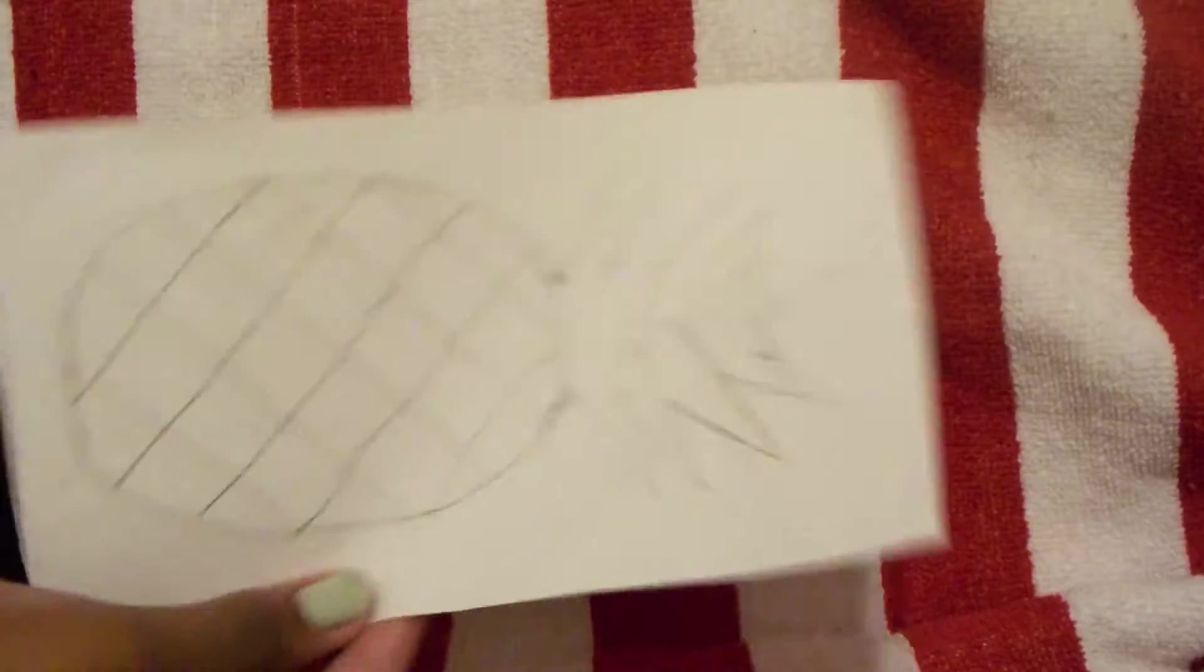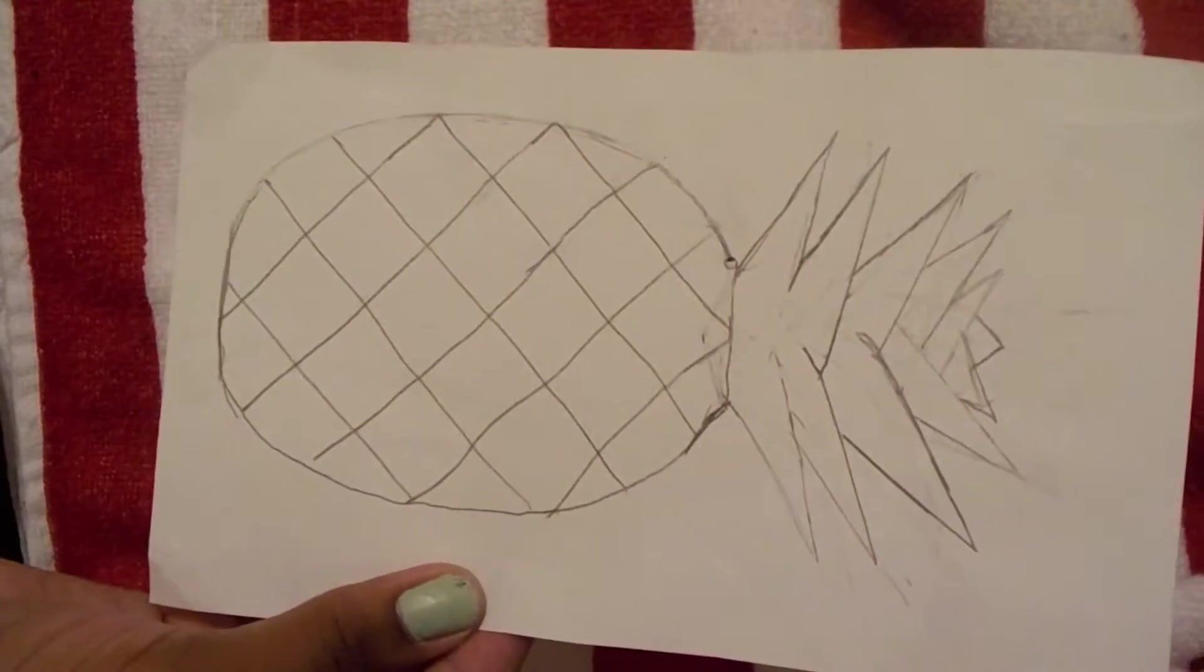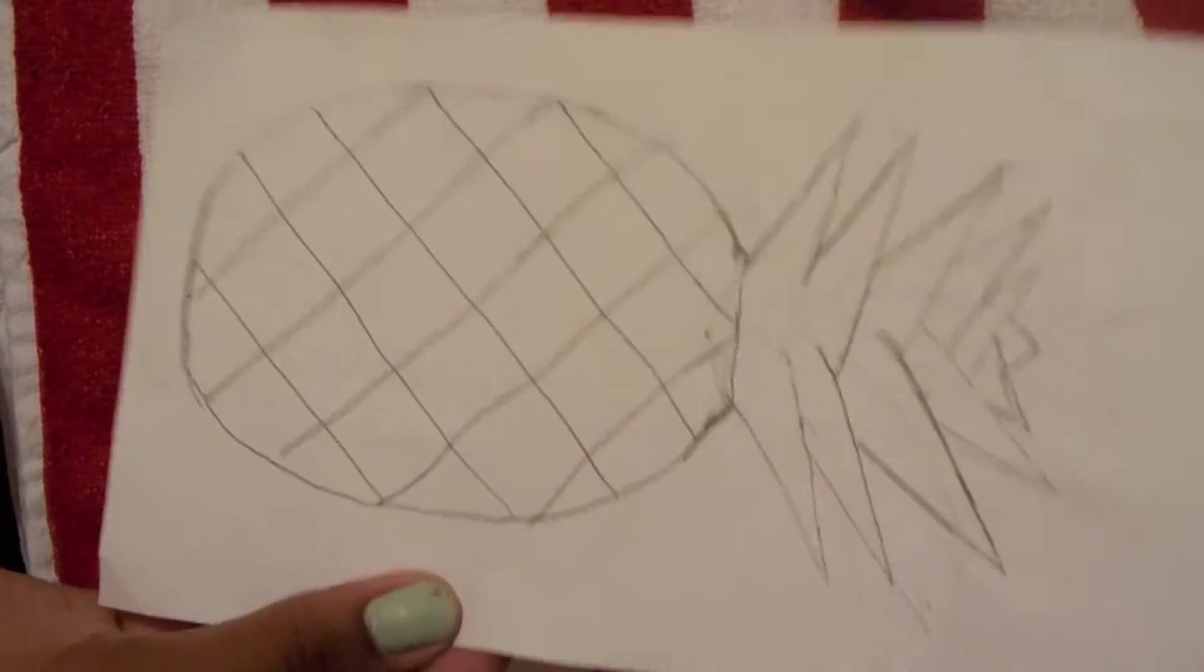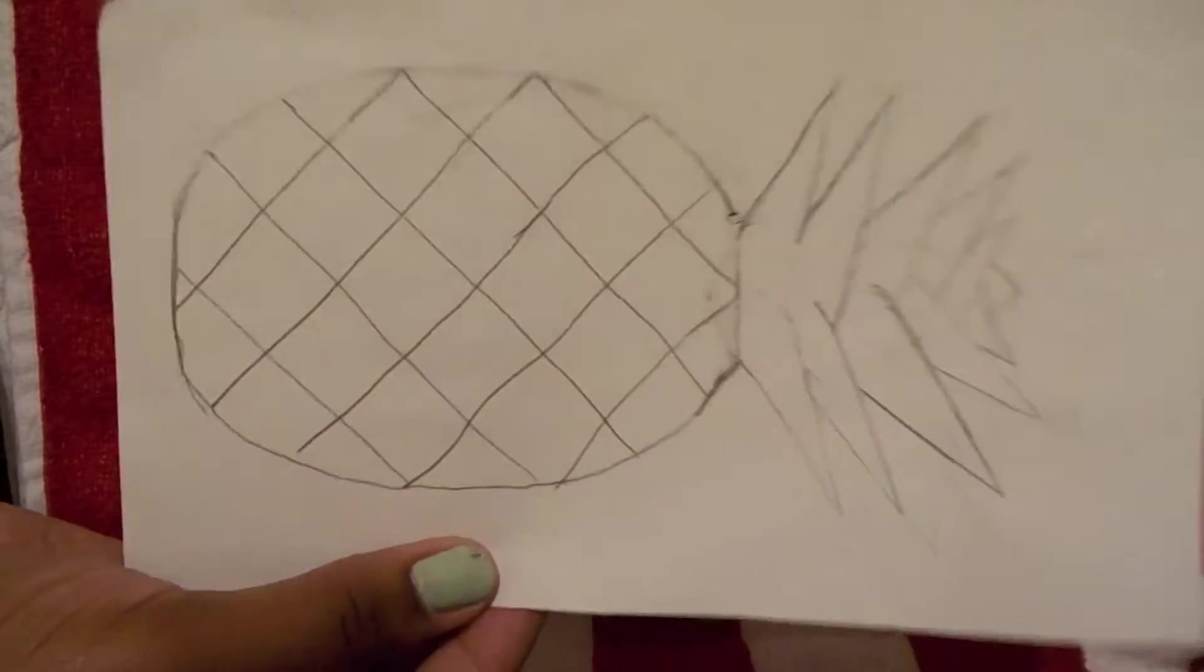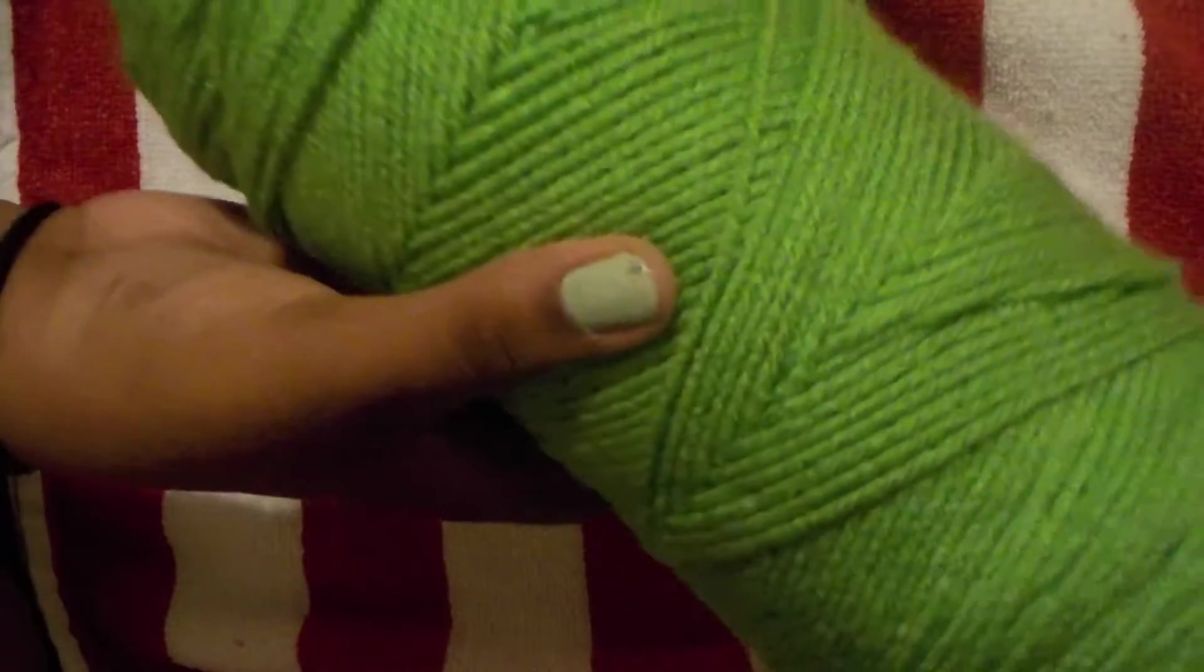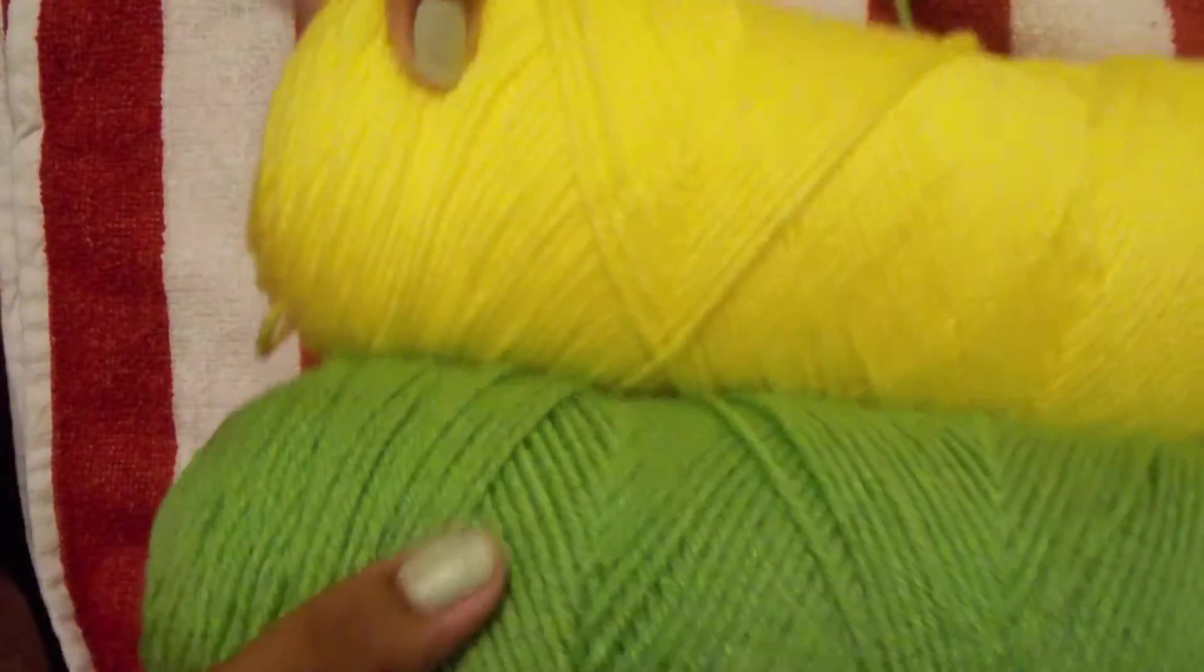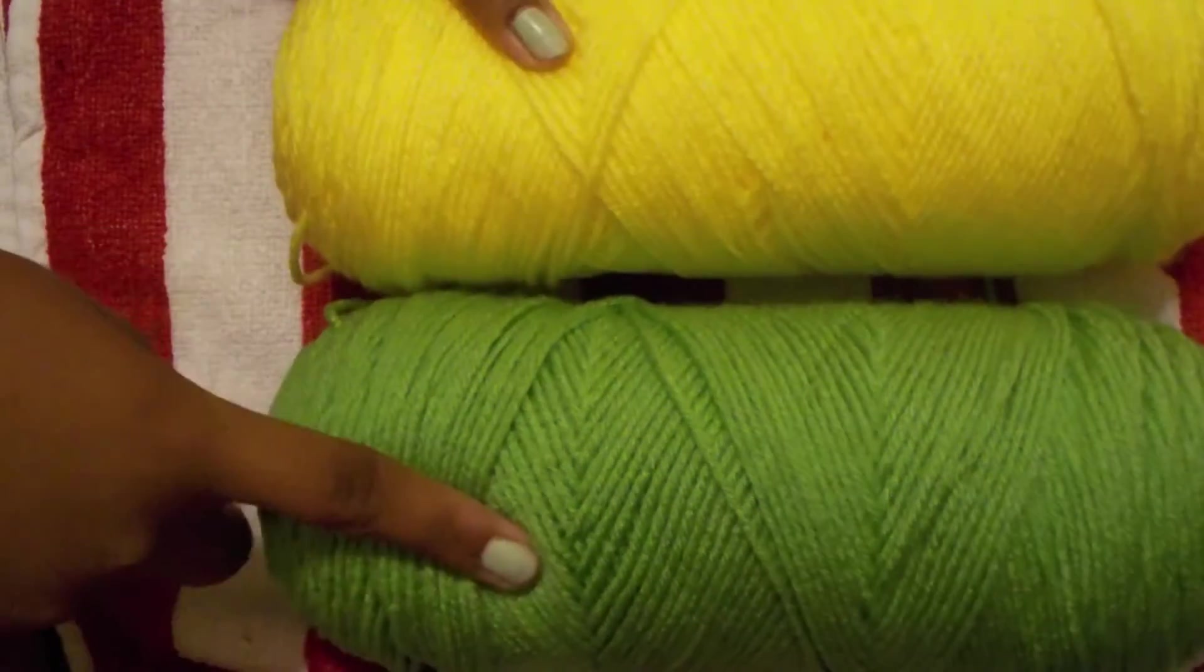You will need either a hand drawn or a painted out picture of a pineapple. Usually I hand draw mine because it's simpler if I want to adjust something, but you can always print yours out because it's a thicker piece of paper. You will need some green yarn and some yellow yarn. You do not have to get these huge packs of yarn. I just make pineapples a lot. These are from previous projects that I've done.